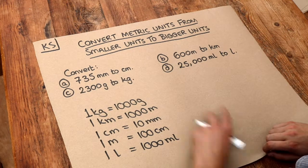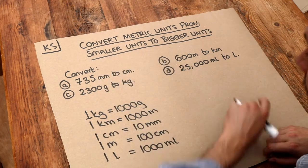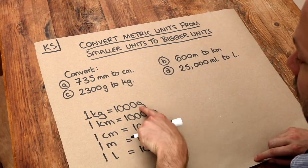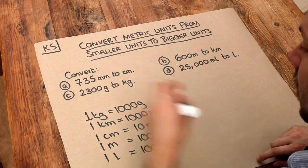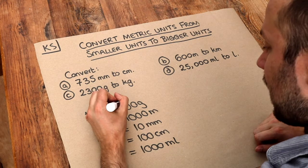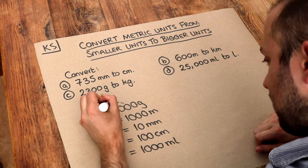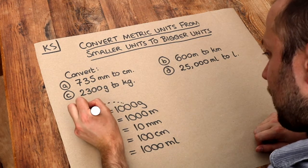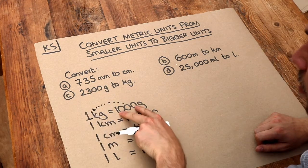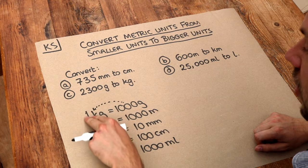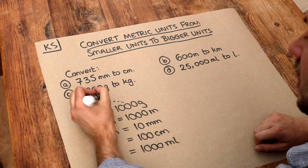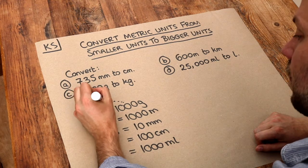Now if we're going from a smaller unit to a bigger unit — for example from grams to kilograms — notice that to get from grams to kilograms, that number of a thousand is getting a thousand times smaller to get to one.